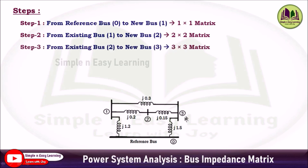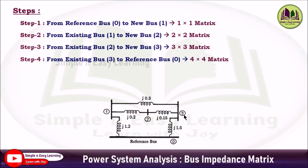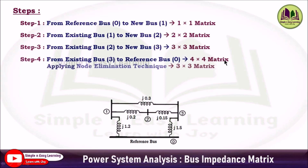Step 3: from bus 2 to bus 3. Bus 2 becomes existing bus and bus 3 is a new bus, considering reactance j0.15. The matrix is of order 3×3. Step 4: from bus 3 to reference. Bus 3 becomes existing bus, considering j1.5. The Z-bus matrix becomes 4×4, so we need to reduce this 4×4 matrix to 3×3 by applying node elimination technique.